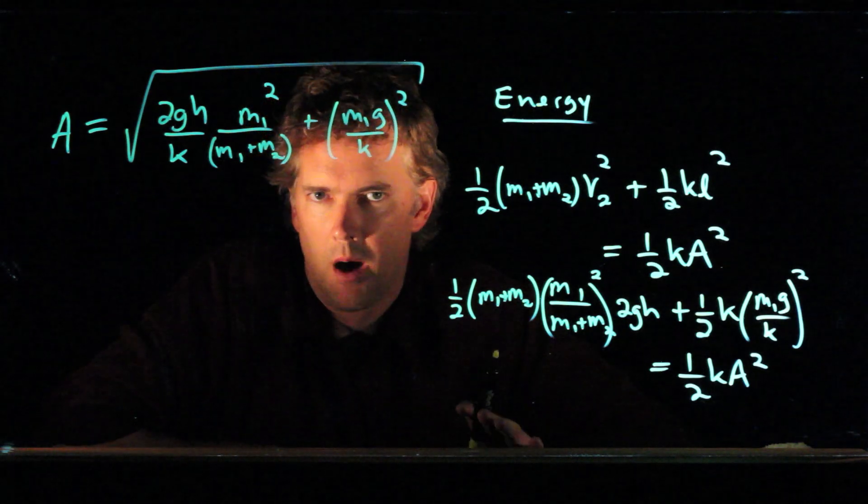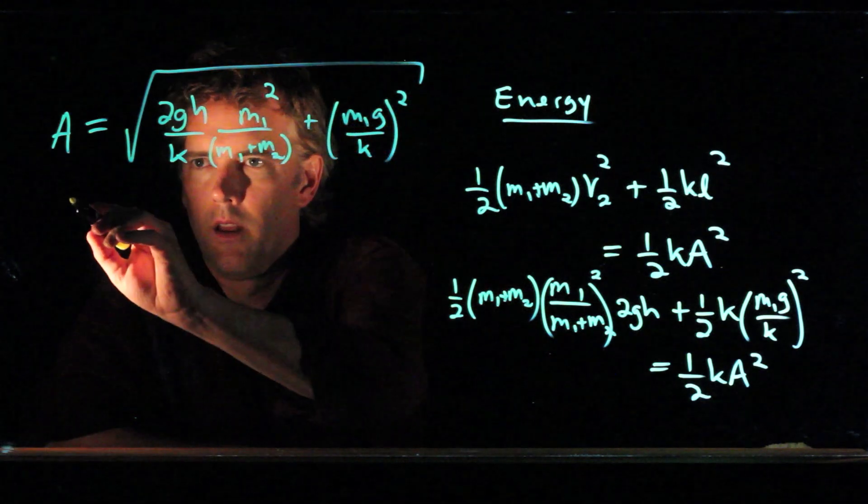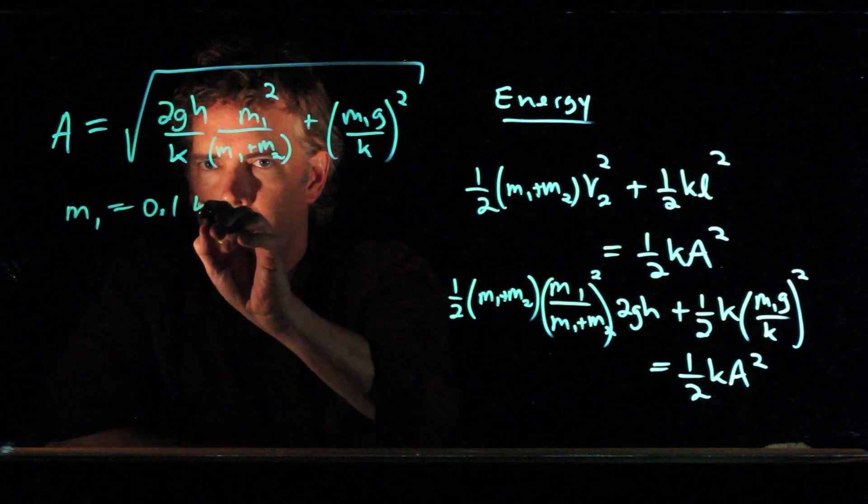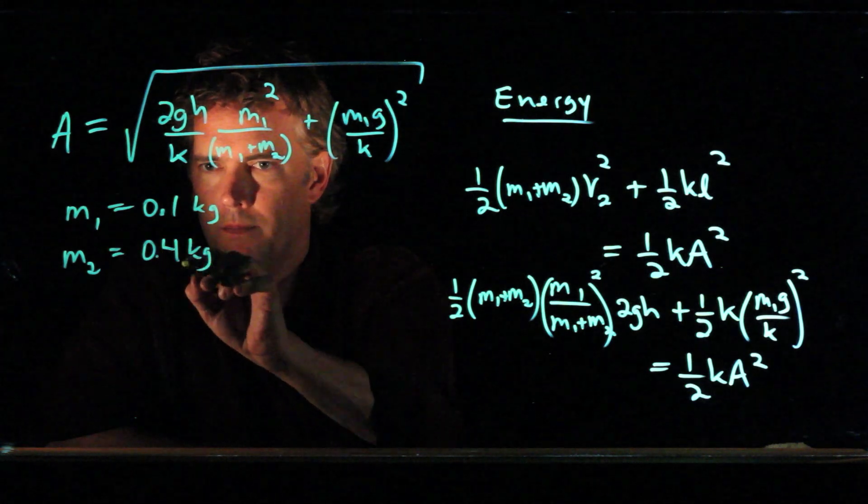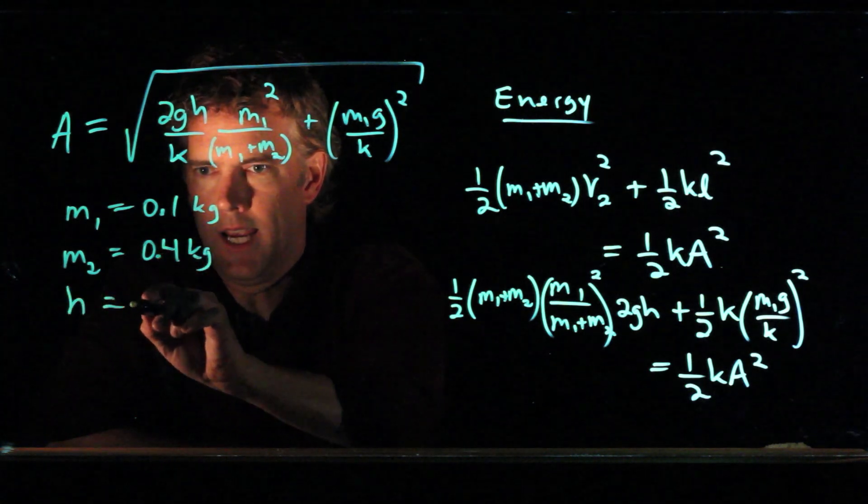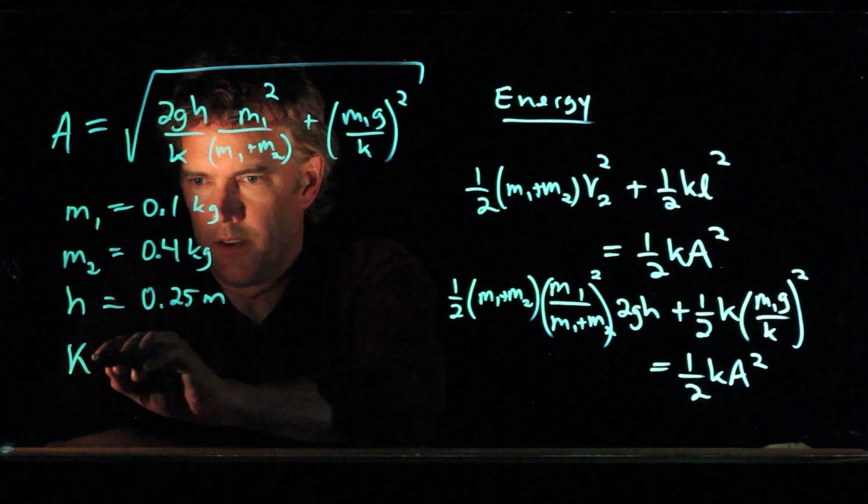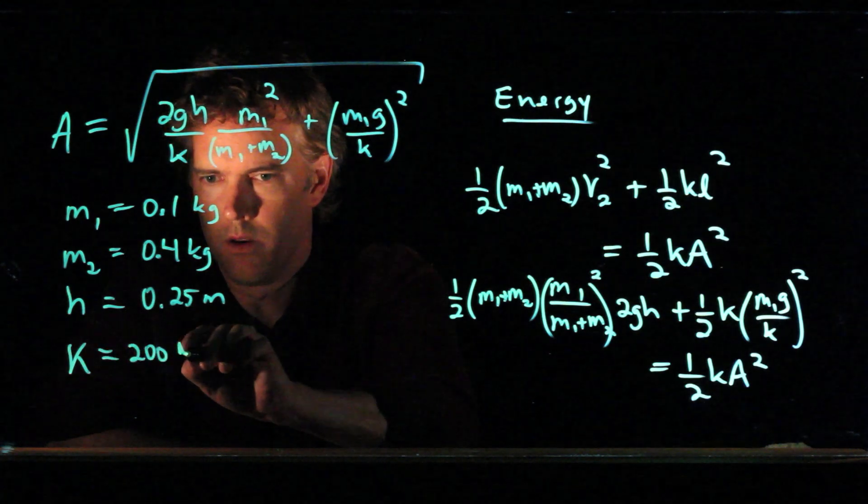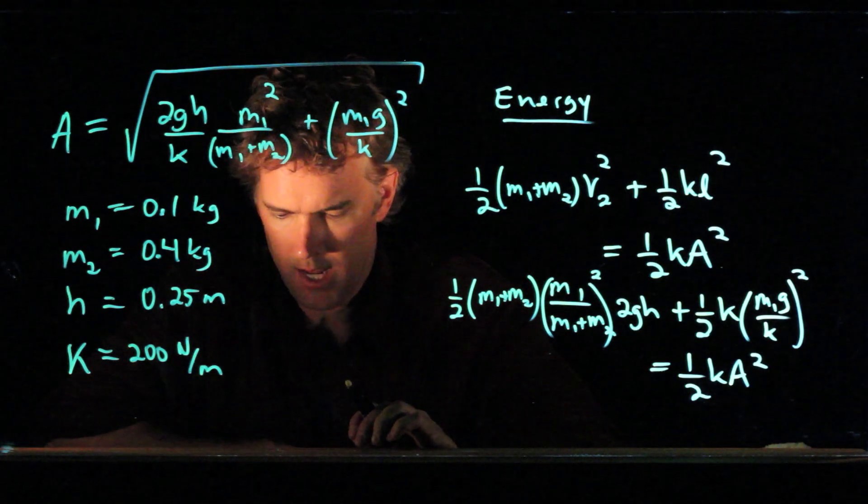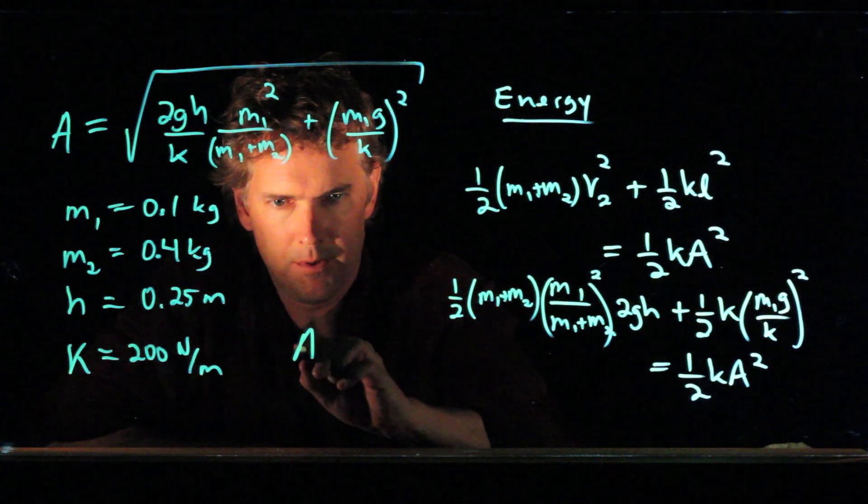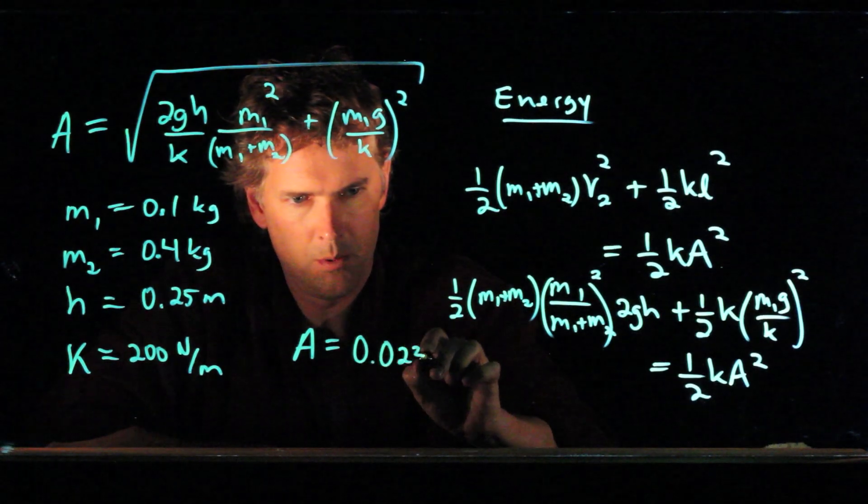Let me give you a few numbers just as an example to try out and you can try it with your own numbers. Let's say that M1 is a tenth of a kilogram, M2 is four tenths of a kilogram, the height H is 25 centimeters, and the spring constant K is 200 newtons per meter. If you try all those numbers in this equation, you should end up with amplitude A is equal to 0.023 meters.